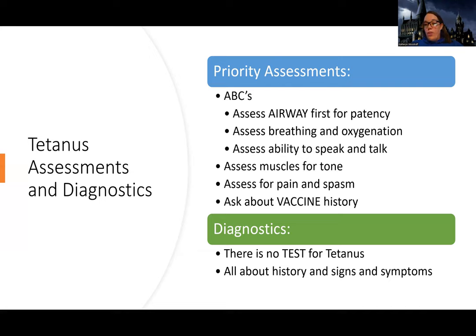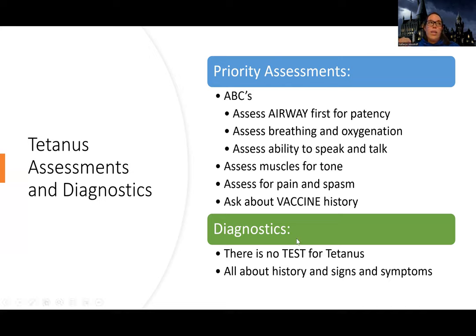A really priority thing is to assess their vaccine history, because that's going to guide the treatment. Believe it or not, there's actually not a diagnostic blood test we can do to confirm tetanus. Because it's a bacteria that attaches to nerves in the brain and spinal cord, it's very hard to test for. That's why a really thorough history and signs and symptoms are so important — that's how doctors diagnose this.